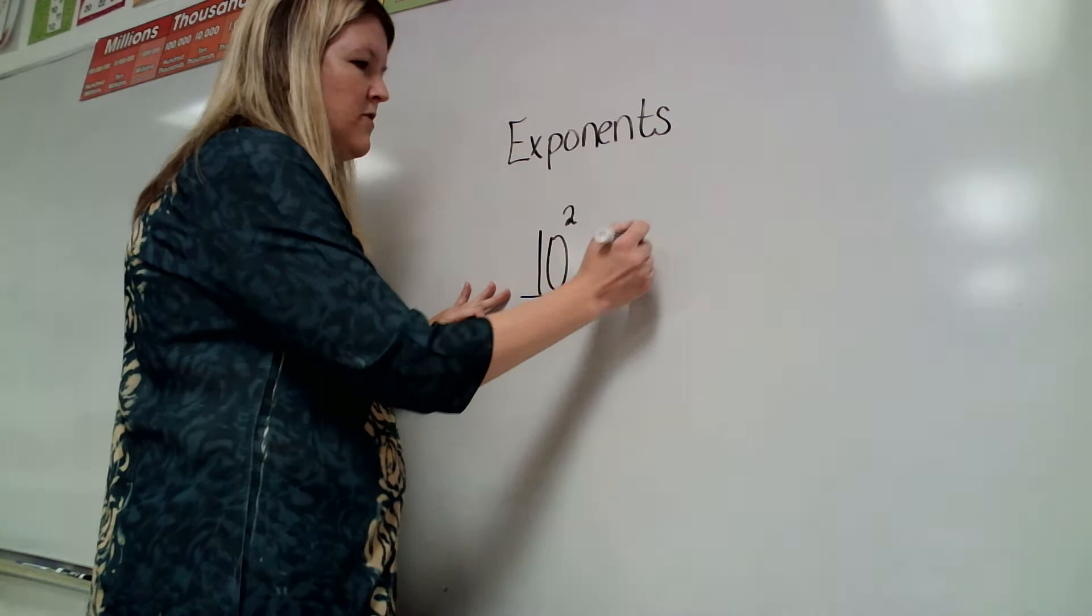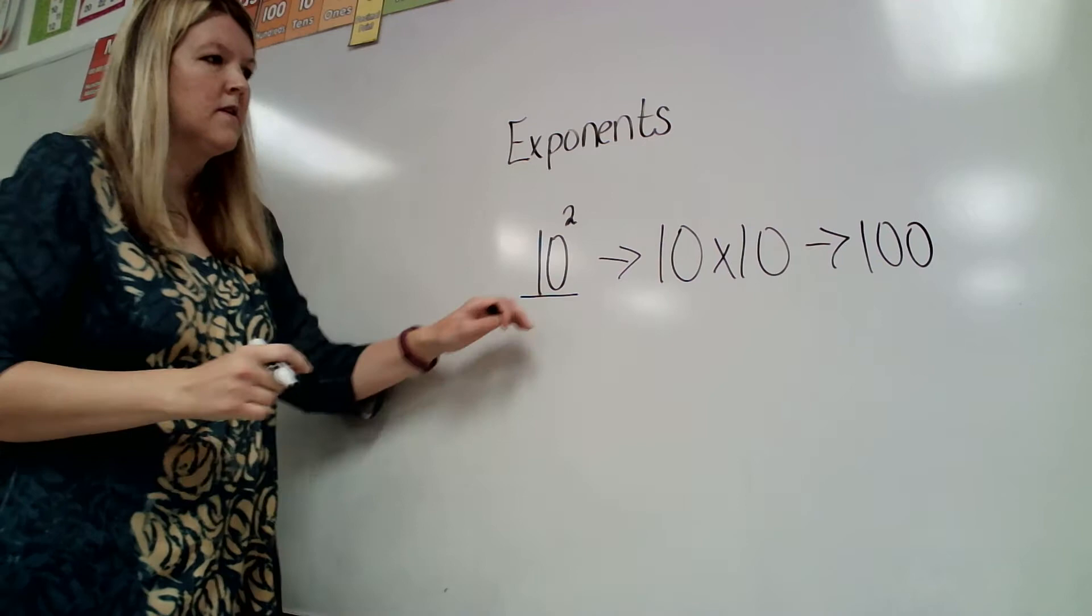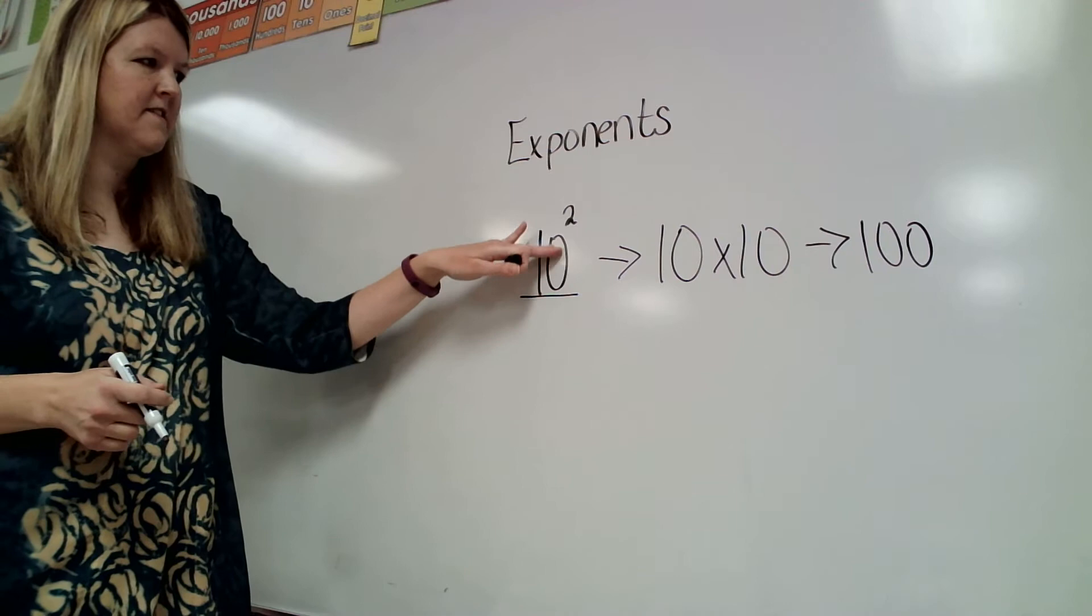So in this case, since we've got a 2, we would do 10 times 10. So 10 times 10 gives us 100. So 10 to the 2nd power is going to be the same thing as 100.